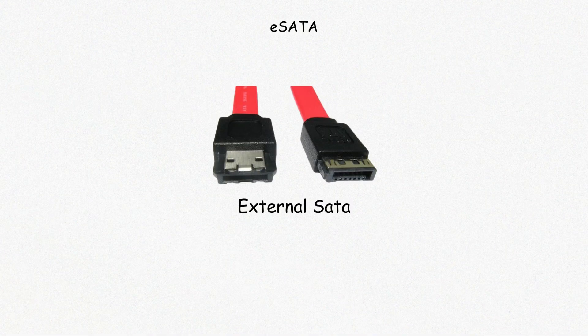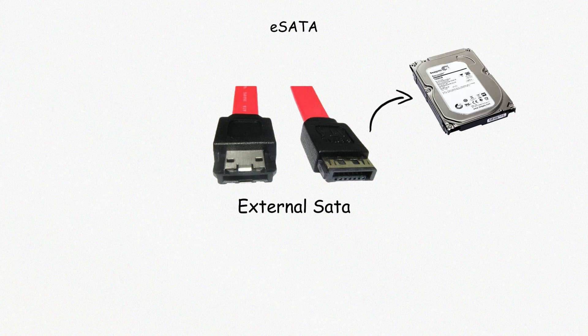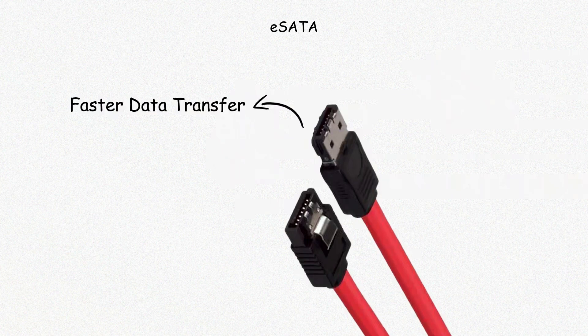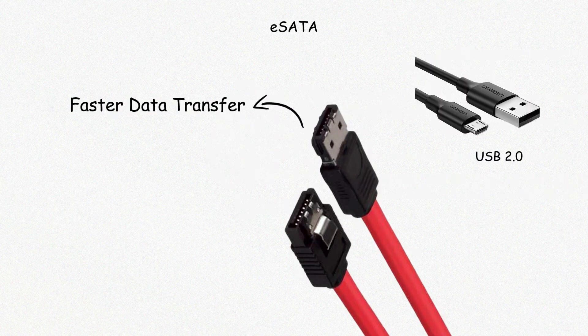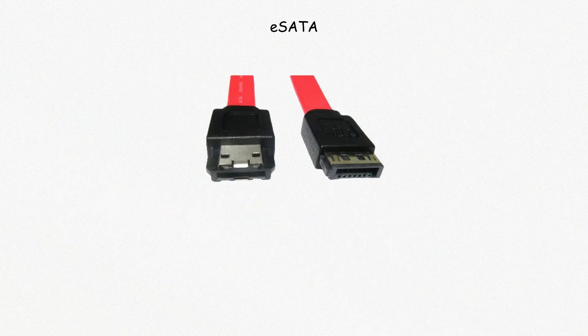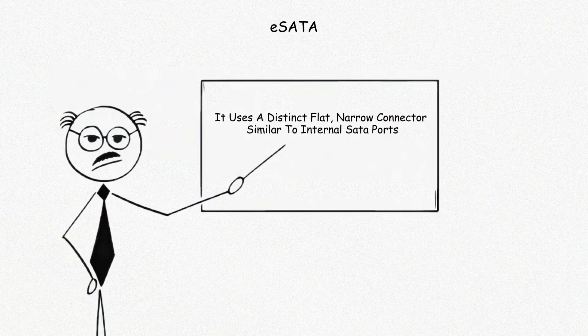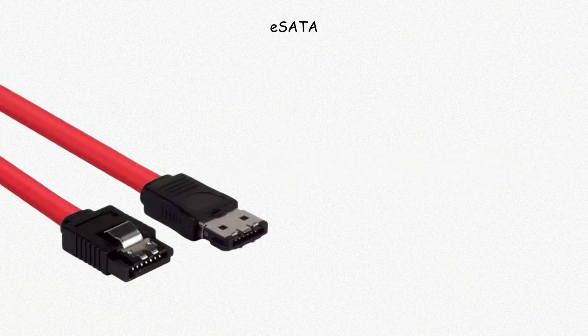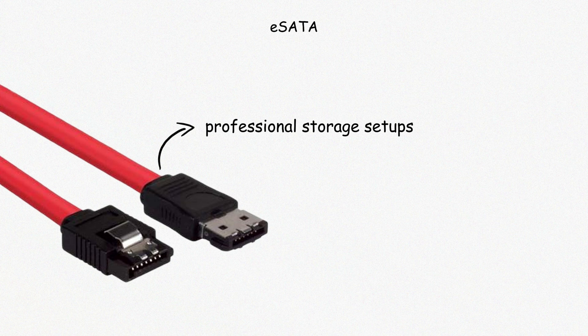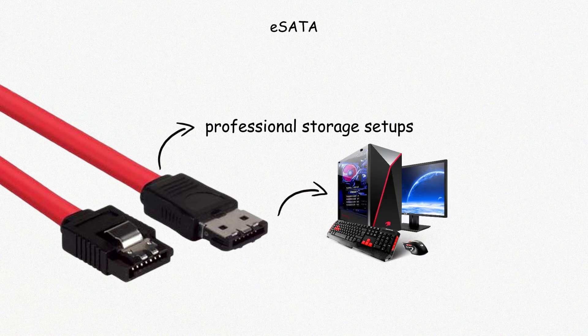eSATA, or External SATA, is a port designed to connect external hard drives using the same protocol as internal SATA drives. It provides faster data transfer than USB 2.0, but has mostly fallen out of favor with the rise of USB 3.0 and Thunderbolt. Unlike USB, eSATA does not supply power — devices need their own power source. It uses a distinct flat, narrow connector, similar to internal SATA ports but slightly modified for external use. eSATA was primarily used for professional storage setups but is now rarely included in modern computers.